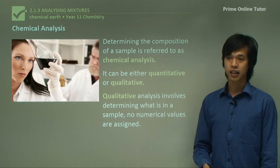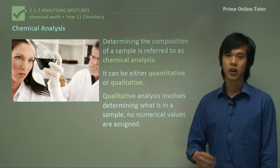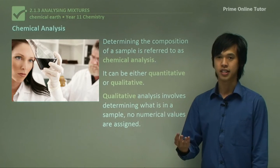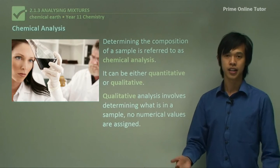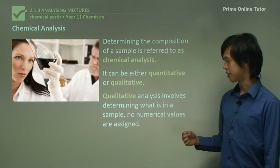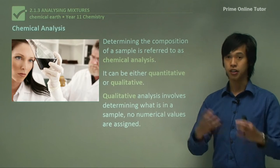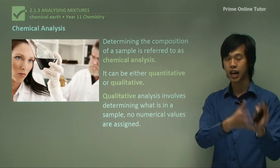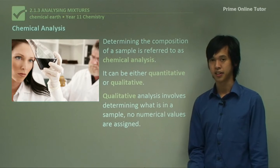So for instance if I heated something up and it changed colour, the colour change maybe went from red to blue. Now I can't assign a number to that change, so it would be a qualitative assessment or a qualitative observation. So it changed from red to blue, that's qualitative because there's no number associated with that. So qualitative analysis involves simply determining what's in the sample. So if I had a chemical and I realized that it was carbon and oxygen, that's qualitative because there's no number assigned to it. We just know that there's carbon in there and there's oxygen in there. So there are no numerical values assigned.